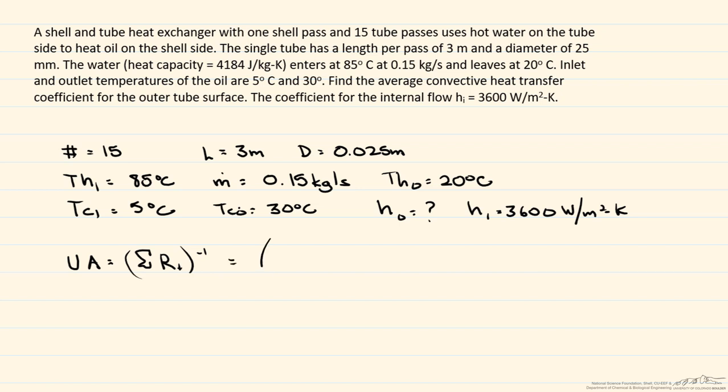And we know that UA is equal to the sum of the thermal resistances to the minus one, which is equal to one over H_outside times the area plus one over H_inside times the area raised to the minus one. So if we can find UA, we can find our H_o.